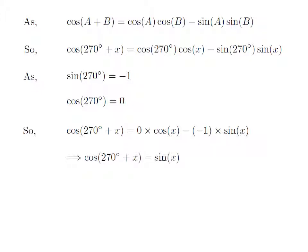As 0 into cosine of x is equal to 0 and minus of minus 1 into sine of x is equal to sine of x, so cosine of 270 degrees plus x is equal to 0 plus sine of x which is equal to sine of x.